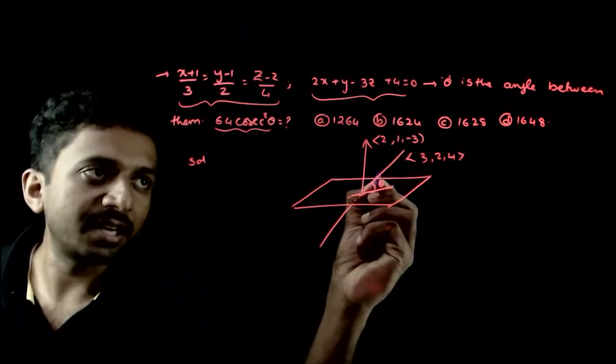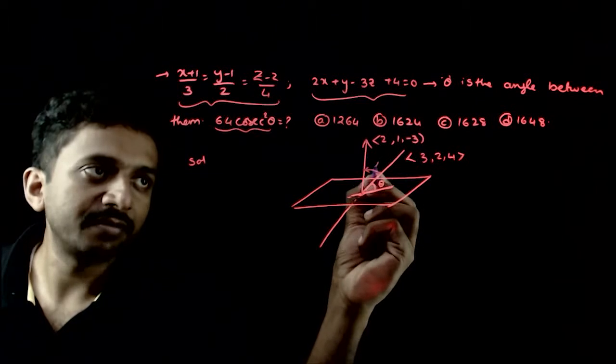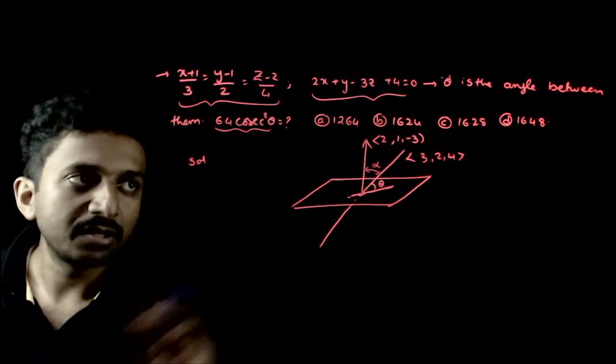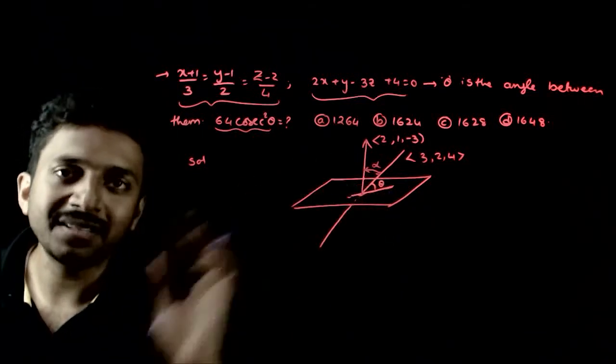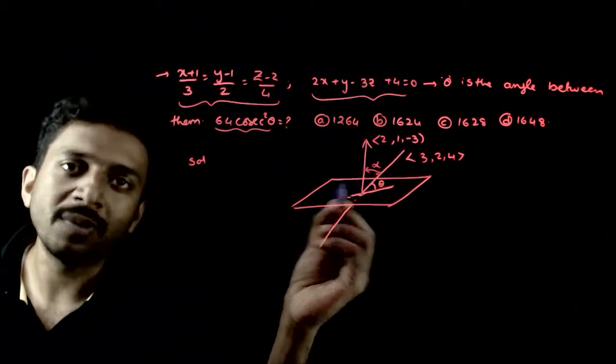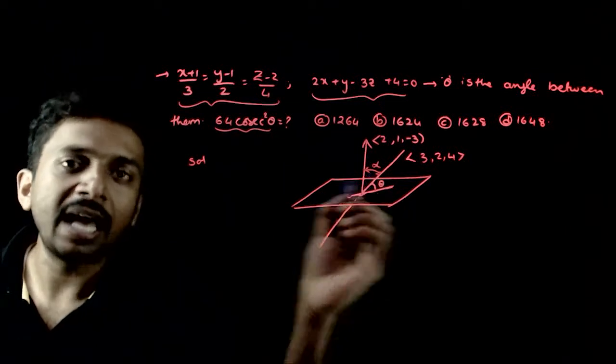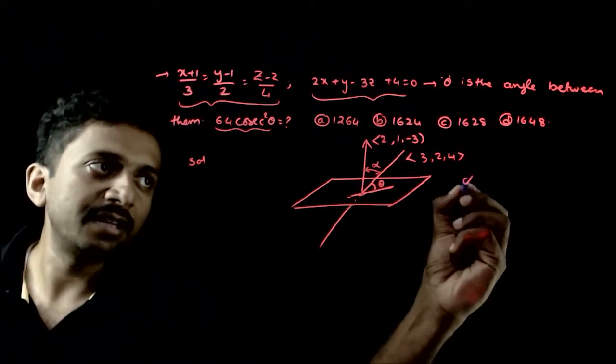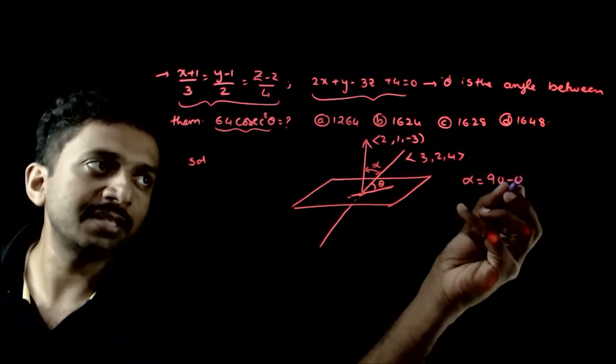First time kya karayenge? Let us take this angle as alpha. Alpha is nothing but 90 minus theta. Can you see this? Agar yewala angle, plane se angle theta bana raha hai toh, plane ka normal se kitna angle bana raha hai ga? Line alpha. So, alpha is equal to nothing but 90 minus theta.